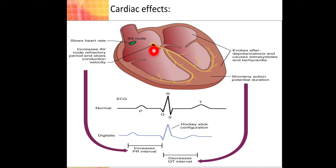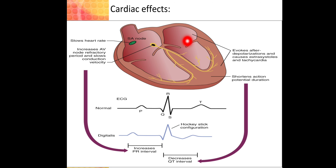On the AV node and His-Purkinje fibers, digoxin decreases conduction velocity and increases the refractory period. In the atria, at lower doses it increases conduction velocity and decreases refractory period, while at higher doses it increases automaticity, resulting in arrhythmias such as pulsus bigeminus or extra systoles. So digoxin decreases conduction in some areas while increasing it in others, and can also cause tachycardia.